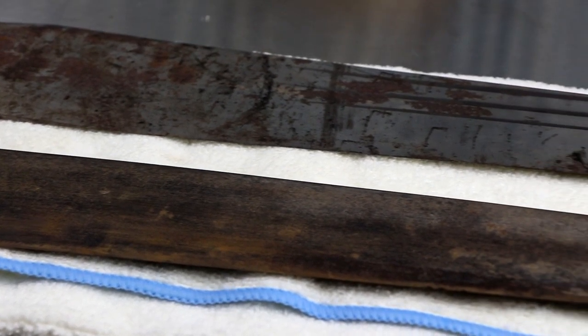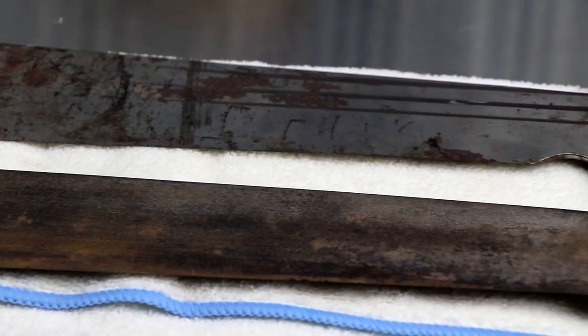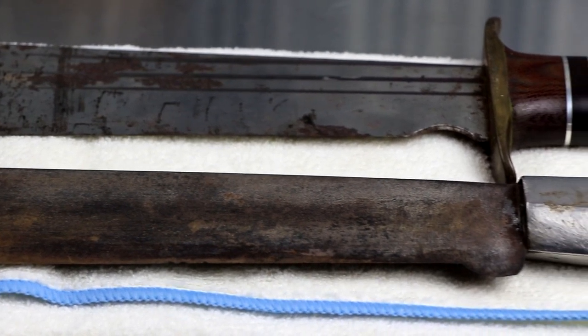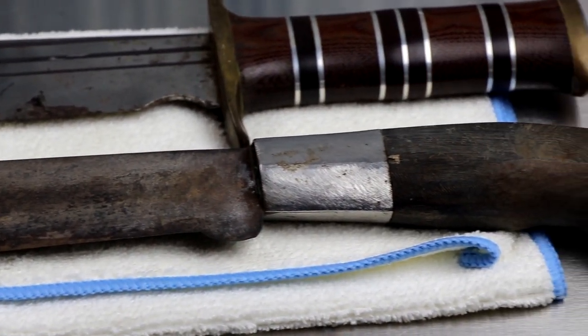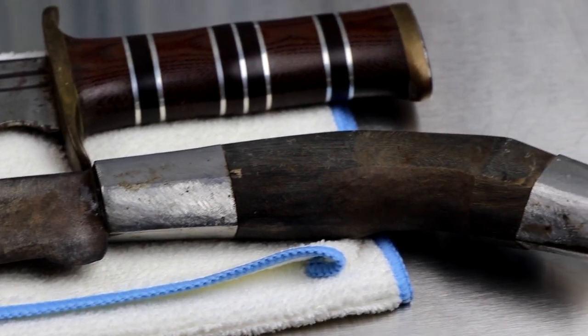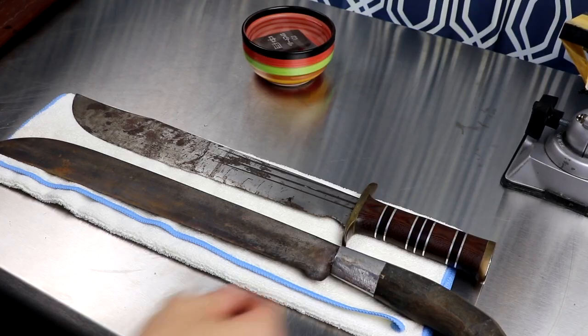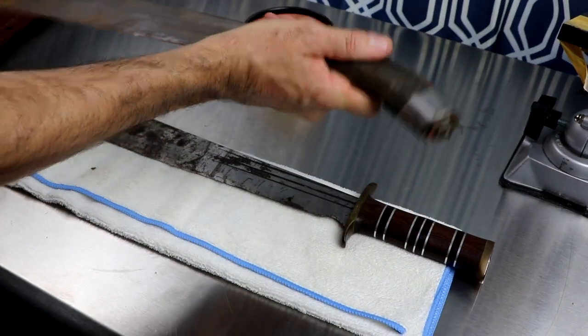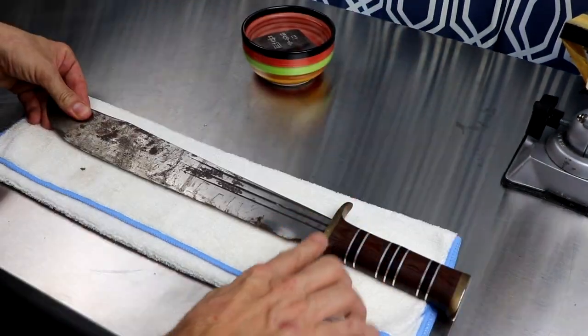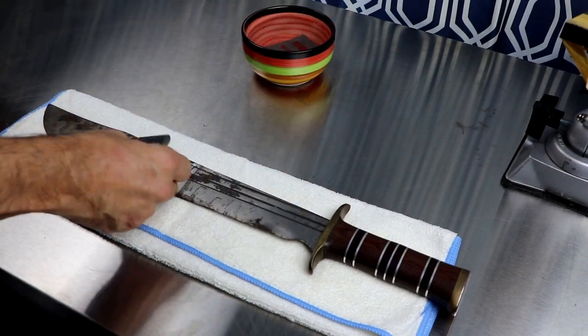As you can see, we have two machetes that we need to sharpen. In this video, we're only going to do one. It's interesting because of all the requests that we get, making videos sharpening machetes is always at the top. The bottom one is in slightly worse shape, and so we're going to save that one for the next video.